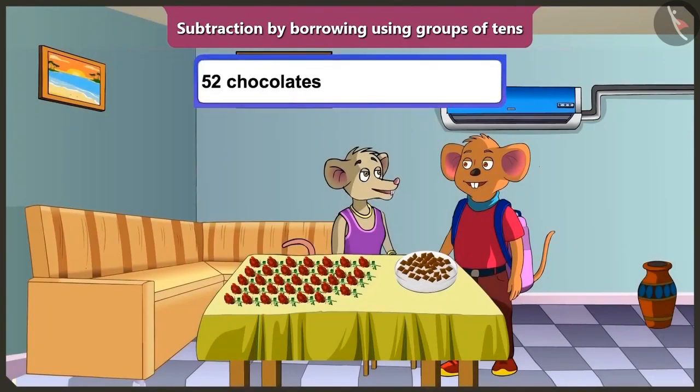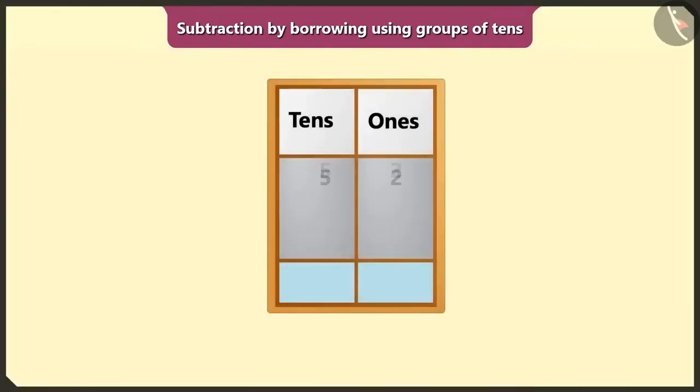We ate 18 chocolates out of 52. So now how many chocolates are left? I don't know. Chi-Chi, let's do subtraction after writing 52 and 18 in the box of ones and tens. Yes, let's do it.